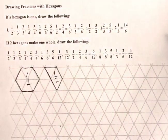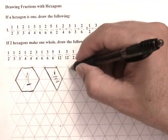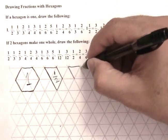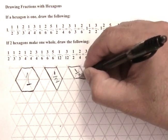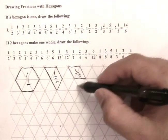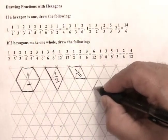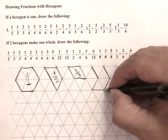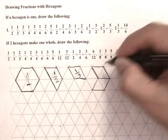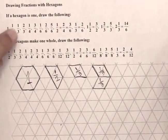Then we are asked to draw one third. After considering the hexagon we can see that this is one third of the hexagon, because two more of these pieces make one whole. So this is one third. Two thirds would look like this — this is one third and another third, so this would be two thirds.